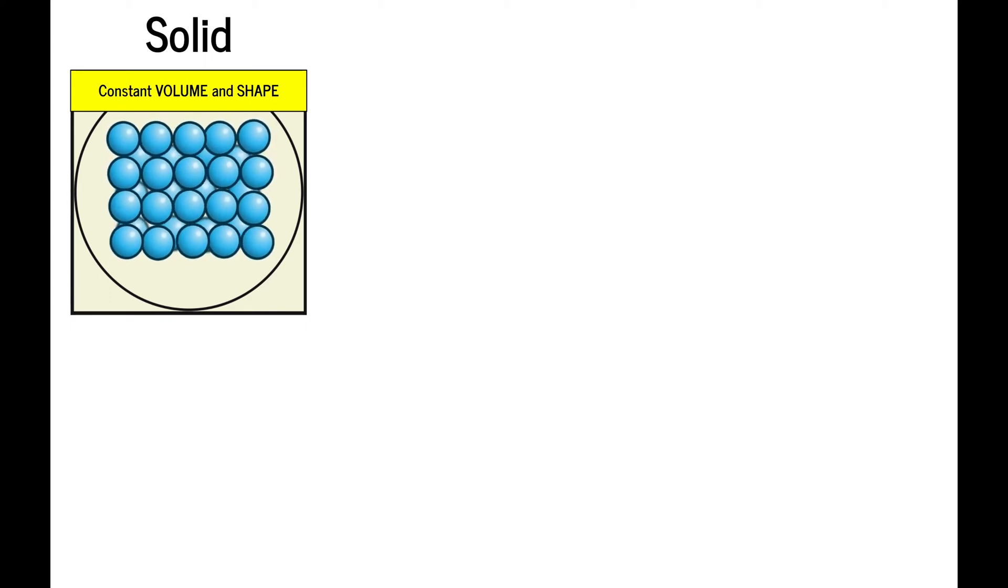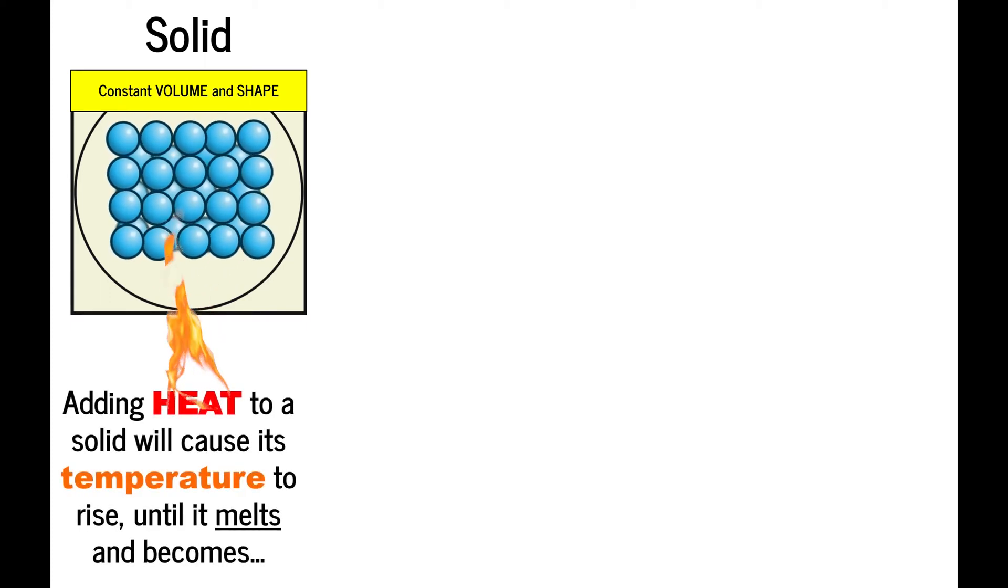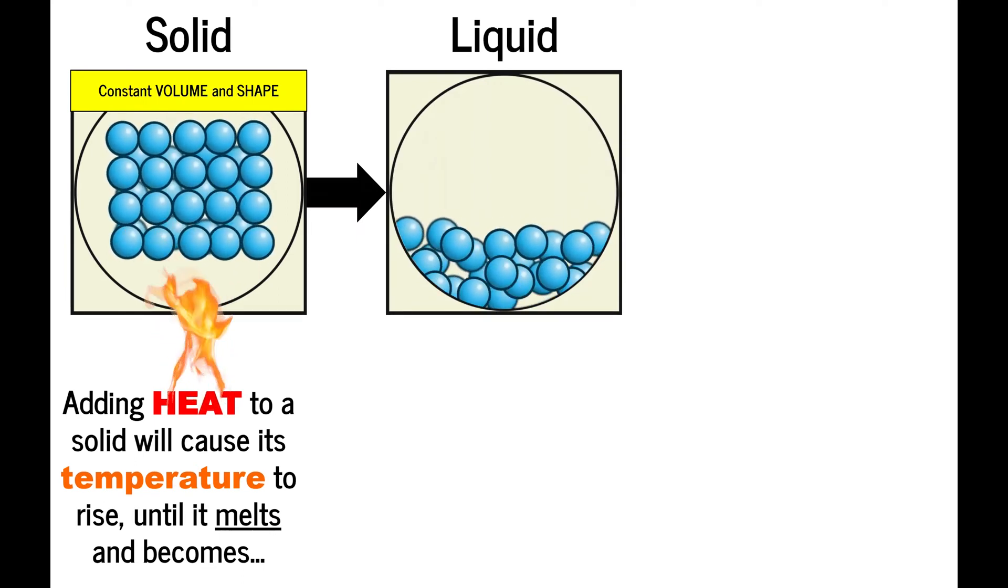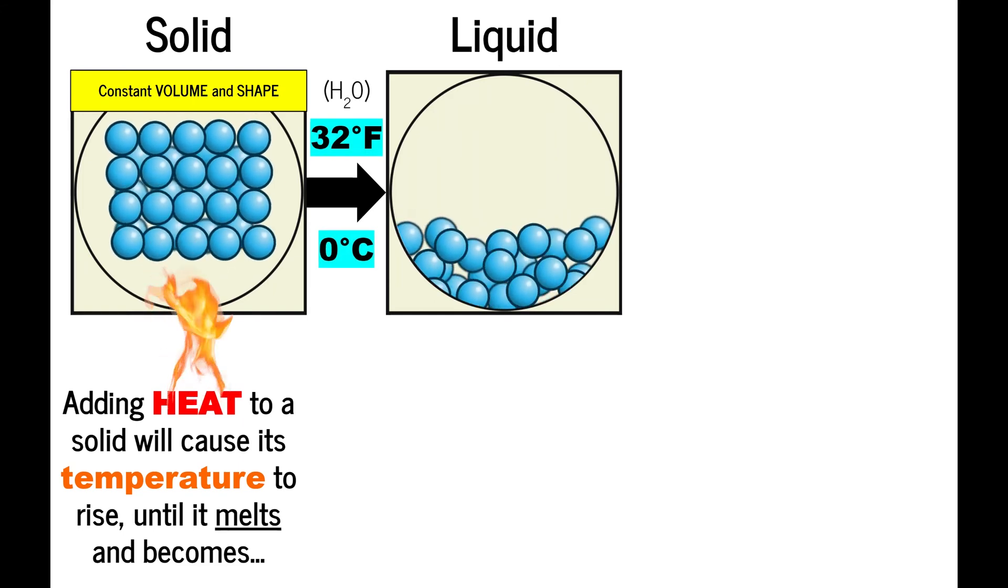Now this probably isn't news to you, but if you add heat to a solid, that will cause its temperature to rise until it melts and becomes a liquid. Do you know what temperature this phase change occurs at? It depends on the scale you're using. If you're using Fahrenheit, then this happens at 32 degrees. But if you're using Celsius, then it happens at zero degrees. More on that later.